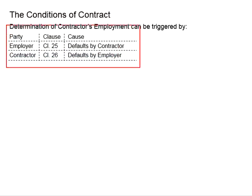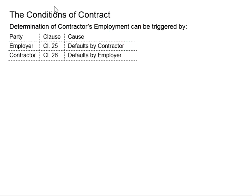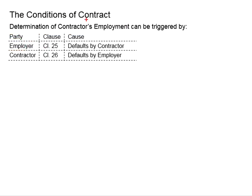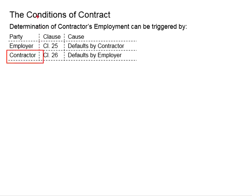We are talking about the determinations of the contractor's employment. Who is the person to trigger this? Clause 25 is about triggering the determinations of the contractor's employment by the employer — this happens when the contractor is at default. In Clause 26, it will be the contractor who decides to terminate himself from the project. This happens when the employer is in default.